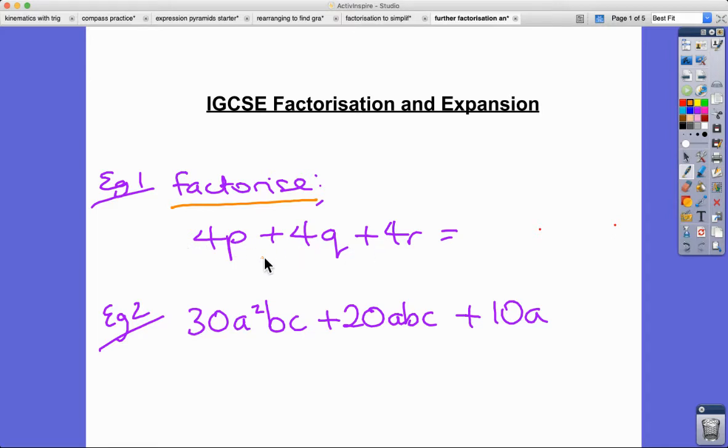So in this case, we've got three terms, and it's really obvious what the common factor is, I hope - there's four in each of them. So now we just have to ask ourselves, what do we multiply four by to get 4P? It's P. And what about 4Q? Well, it's just Q, and then so on for R. So if we were to expand the bracket now, 4 times P is 4P, 4Q, 4R would be the three terms that come out.